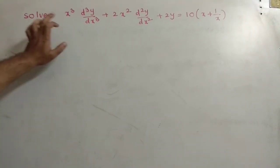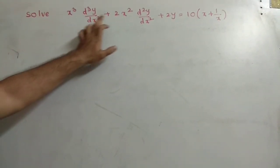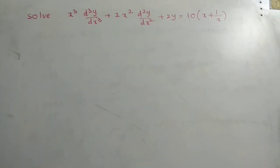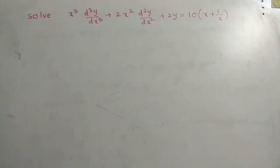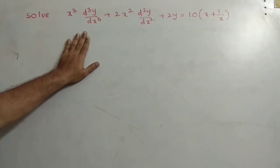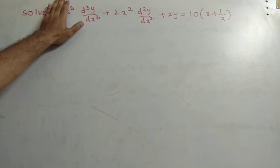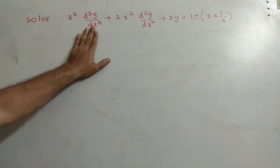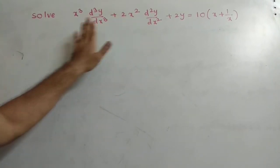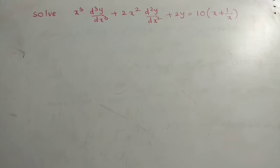Let us solve the problem: x³d³y/dx³ + 2x²d²y/dx² + 2y = 10(x + 1/x). Is it a Cauchy-Euler differential equation? x³ must have d³, x² must have d² — they are in the same combination, so yes, it is a Cauchy-Euler differential equation.